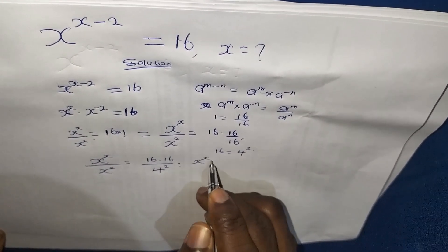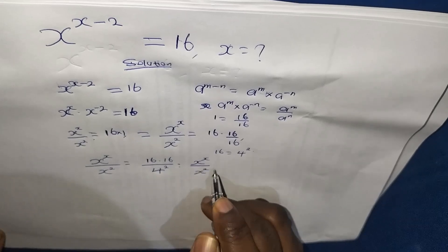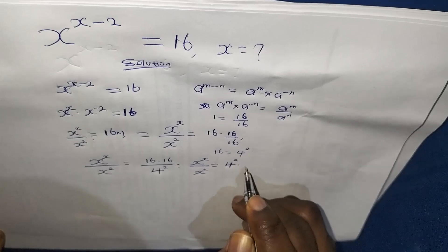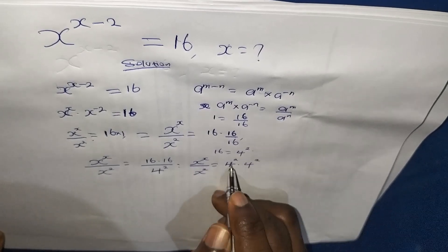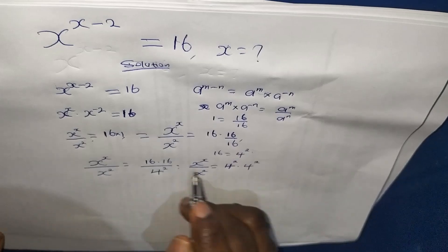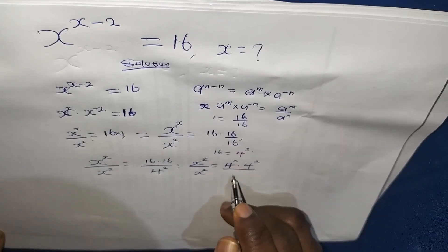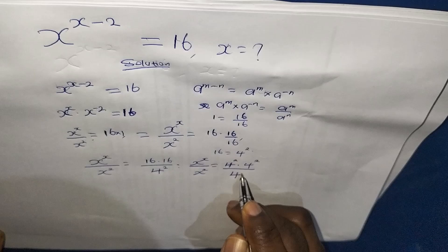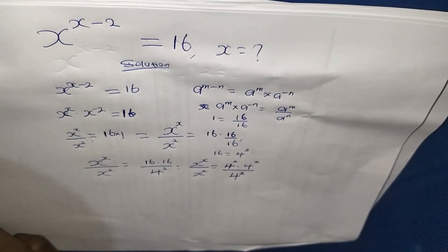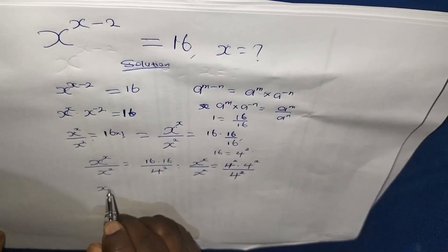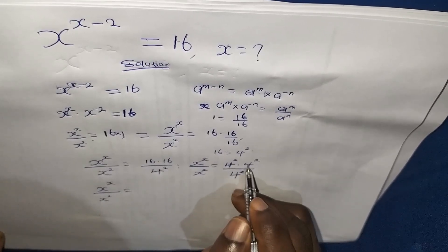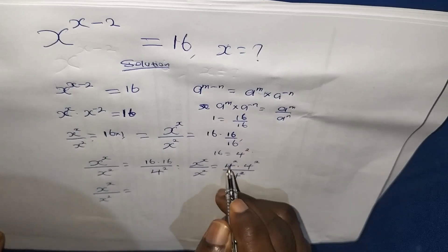I can write x to the power of x all over x squared is equals to 4 to the power of 2 times 4 to the power of 2 all over 4 to the power of 2. This first 4 to the power of 2 gives us the first 16, and the second 4 to the power of 2 gives us the second 16, all over 4 to the power of 2.